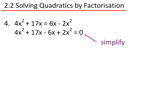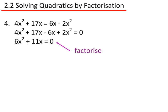I need to simplify this. So 4x squared and 2x squared give me 6x squared. 17x minus 6x give me 11x. So 6x squared plus 11x equals 0. Factorizing this, x times 6x plus 11 in brackets equals 0.